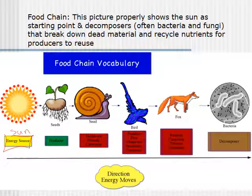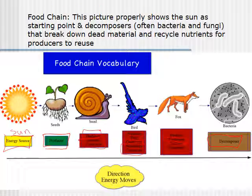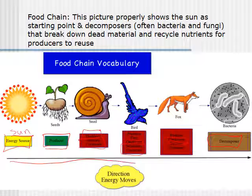Many food chains will ignore that fact and just start straight at the producers without acknowledging that without the sun, the producer level doesn't exist. Then you have the primary consumers, also called herbivores because they eat plants, followed by the secondary consumers, which are usually omnivores. Then you work your way up towards the carnivores — the tertiary and quaternary consumers. This picture also shows decomposers as part of the food chain. Decomposers could be argued to be at the beginning as well, since they break down producers and producers use the nutrients decomposers create to grow. The arrow at the bottom shows energy flowing from the sun all the way up through the different levels.